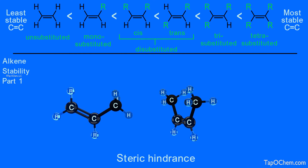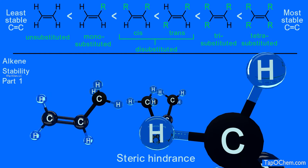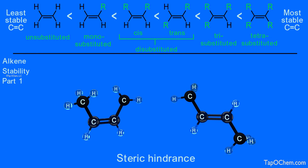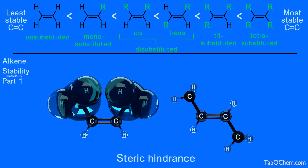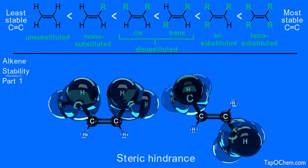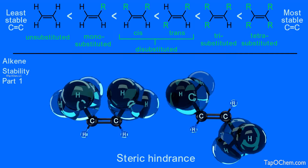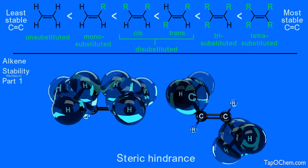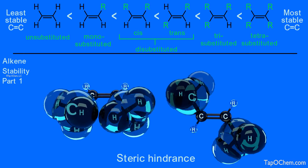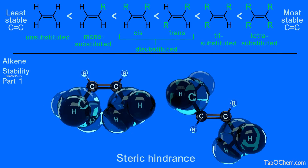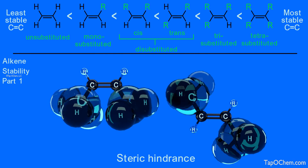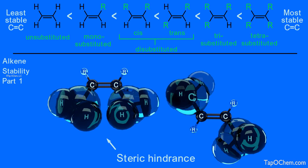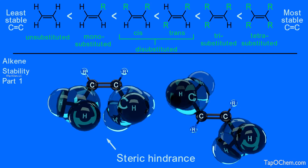Let's compare ball-and-stick models of cis and trans-2-butene to visualize this difference. We will now show the electron clouds for the cis methyl groups and the trans methyl groups. We can see that the proximity of the two methyl groups' electron clouds produces an unfavorable non-bonding interaction in the cis compound. This steric hindrance between methyl groups causes cis-2-butene to be less stable than trans-2-butene.